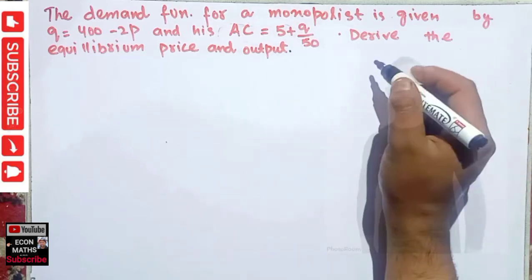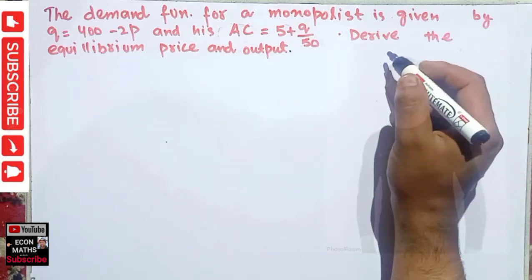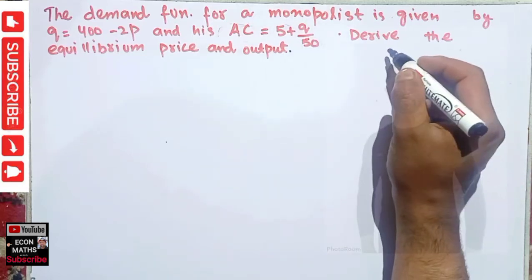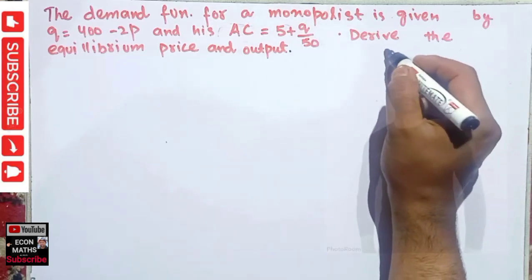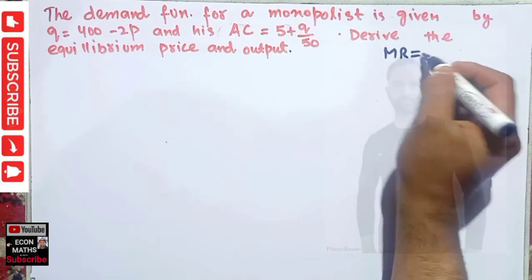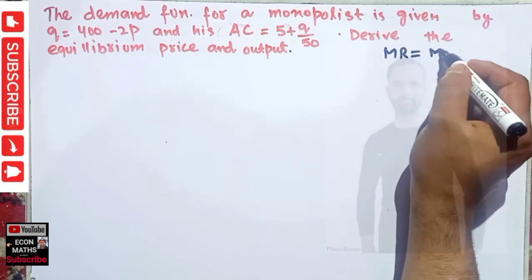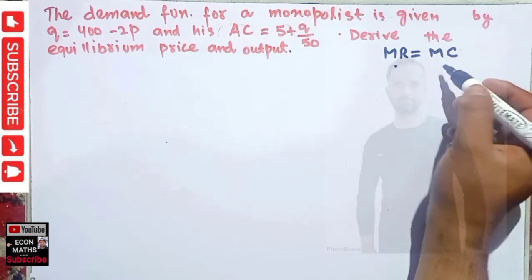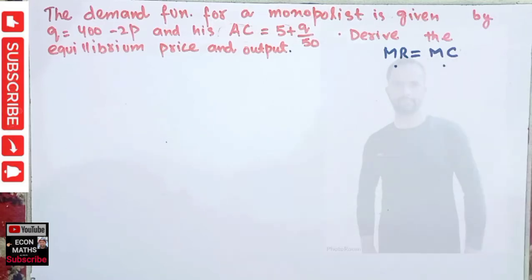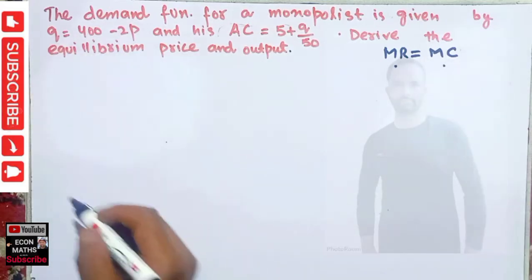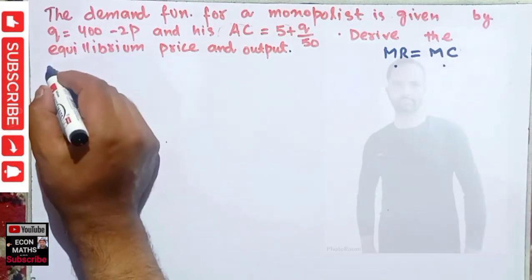As we know, the first-order condition for profit maximization requires that marginal revenue should be equal to marginal cost. So we will find first the marginal revenue and then the marginal cost. We are given the demand function.